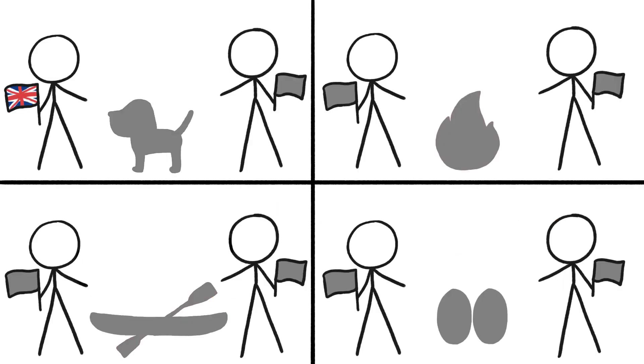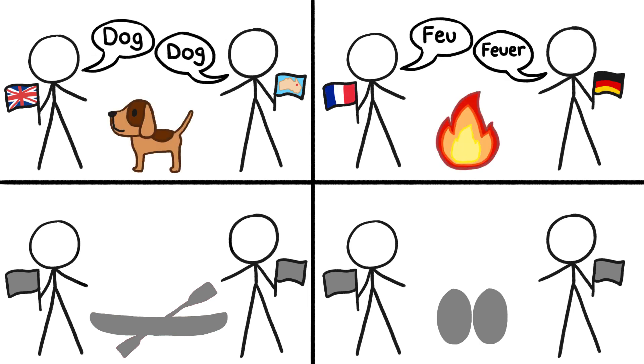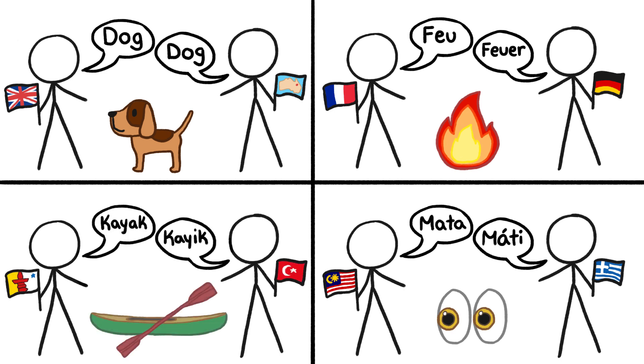Other coincidences include the English and Mbaram words for dog, the French and German words for fire, the Malay and Greek words for eye, and the Enuptitude and Turkish words for boat.